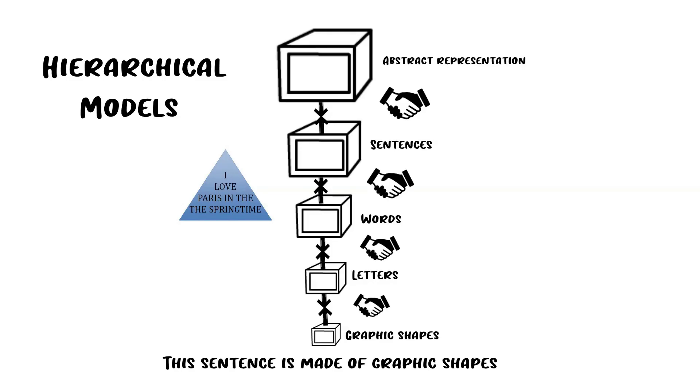Here's another example that occurs at the graphic shape and letter level. When you read these two words, you read it as 'the cat,' but consider the fact that the 'h' and 'a' and the 'a' and 't' are the exact same shape. Your brain is able to use its models to predict that in the first word it's an 'h' for 'the' and in the second word it's an 'a' for 'cat.'